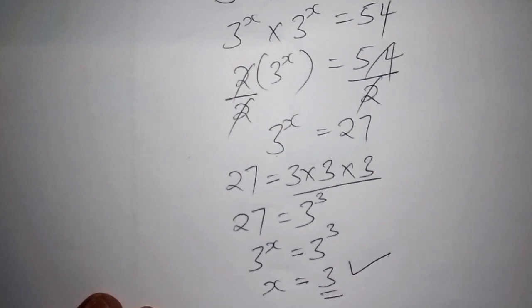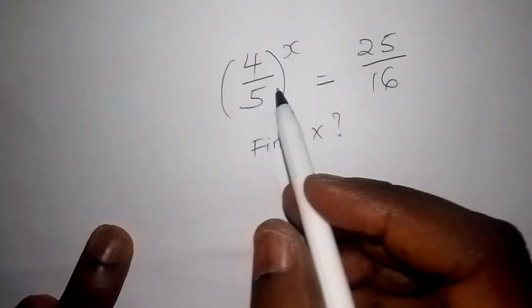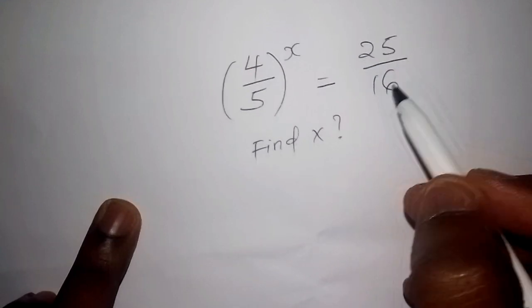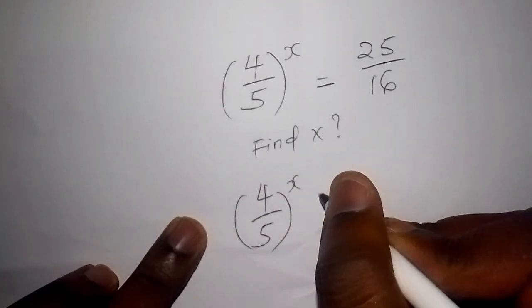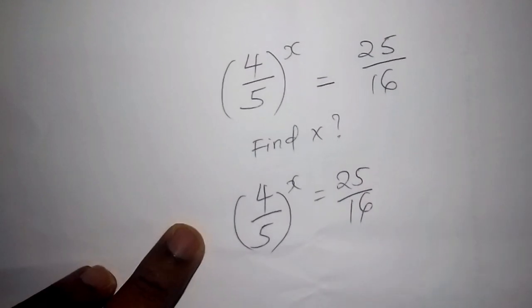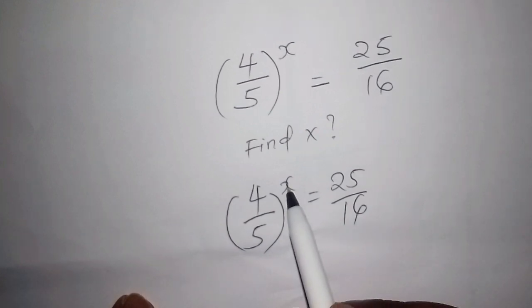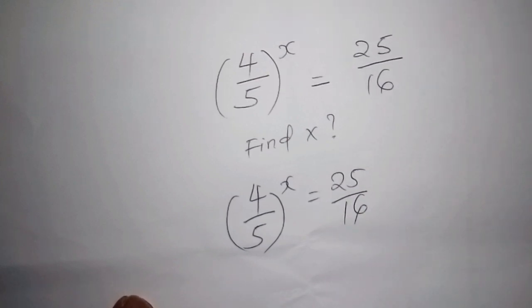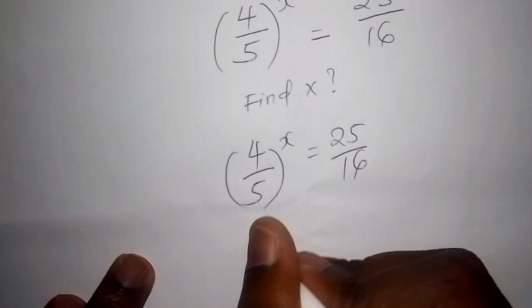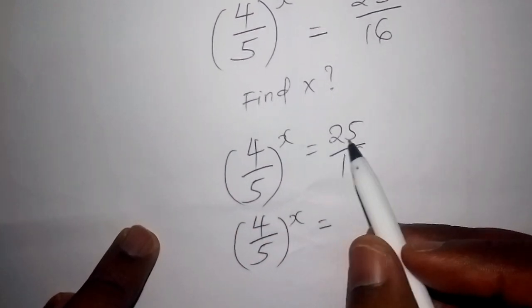If you got x equals three, thumbs up — you still remember your powers! Let's work out the last one. We have four over five to the power of x equals 25 over 16. We need to change 25 over 16 to its own power so that the bases match.